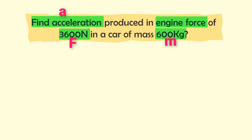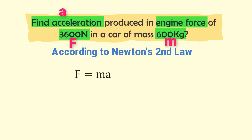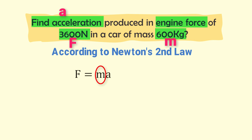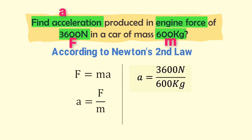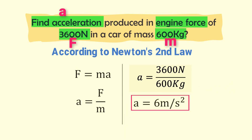In this problem we are again given three variables: F, M, and A. According to Newton's second law, F is equal to MA. We need to find acceleration A, so we rearrange: A is equal to F divided by M. Plugging in the values, A is equal to 3600 newtons divided by 600 kg, giving us 6 meters per second squared.